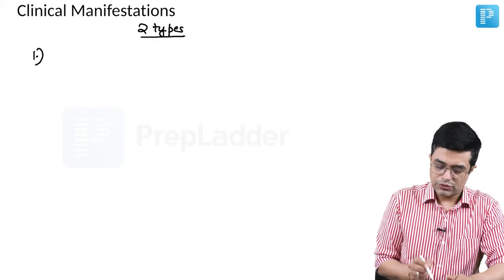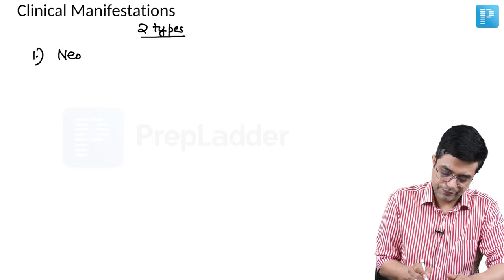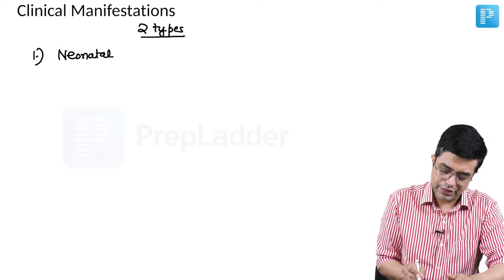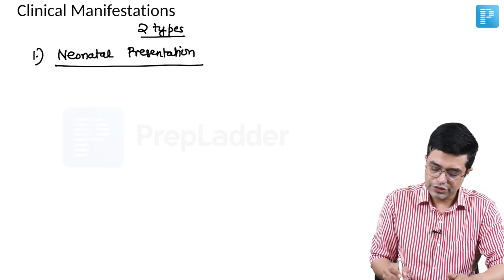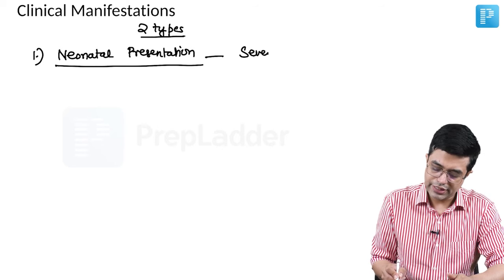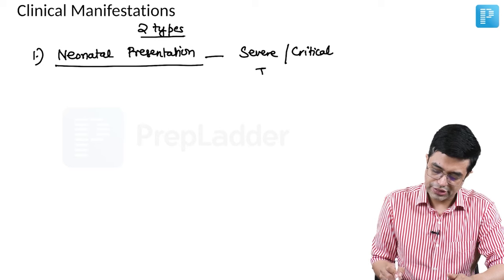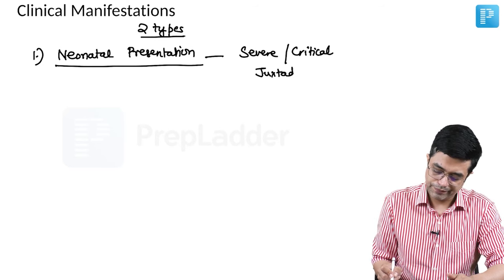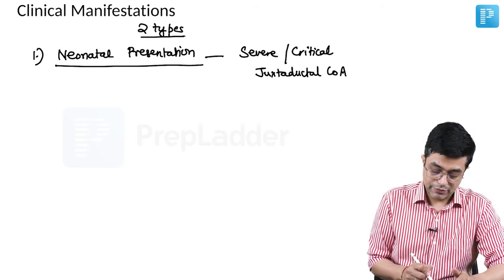The first form we will be talking about is the neonatal presentation. Neonatal presentation, also called infantile presentation, will happen in patients with severe or critical juxtaductal coarctation of aorta. Now, try to understand what is happening here. Let me show you diagrammatically.